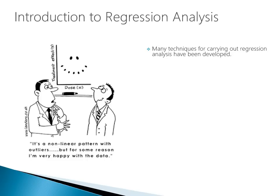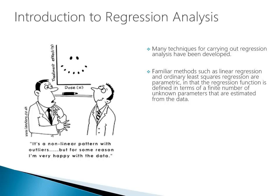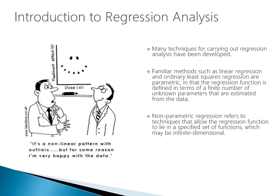Many techniques for carrying out regression analysis have been developed. Familiar methods such as linear regression and ordinary least squares regression are parametric, in that the regression function is defined in terms of a finite number of unknown parameters estimated from the data. Non-parametric regression refers to techniques that allow the regression function to lie in a specified set of functions, which may be infinite dimensional. Our focus will be on ordinary least squares regression and parametric methods.